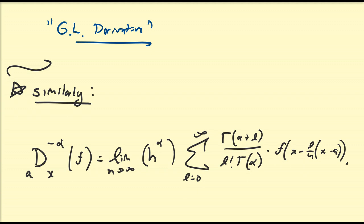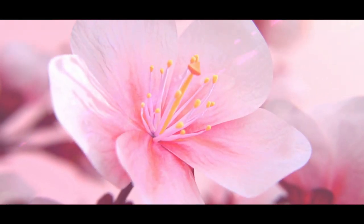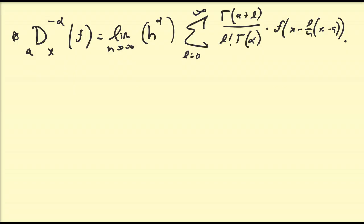So in this video, we're going to bring together the ideas of differentiation and integration, starting with the result we have proved in the previous videos. We're going to begin by considering some values of alpha so that we can get some connection to the integral operator that we know from standard calculus. We're going to consider alpha equal to one in this identity above.